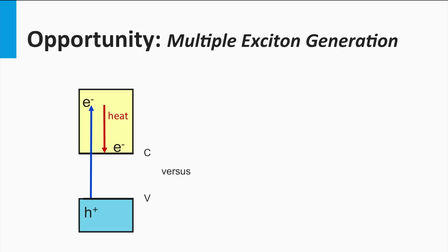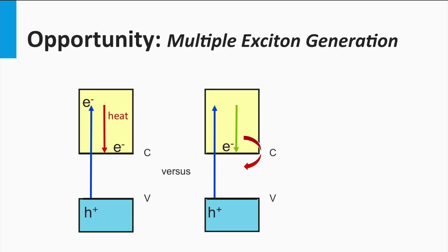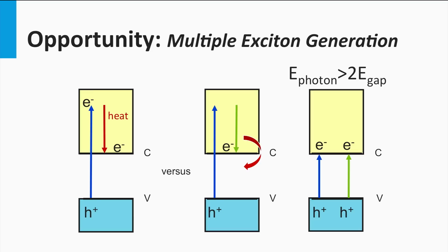Multiple exciton generation, abbreviated MEG, is another approach which can accomplish the excitation of more than one electron-hole pair per photon. The difference with spectral down-conversion is that all fundamental energy conversion steps occur in the PV active layer. In a normal semiconductor material, a high-energetic photon has some rest energy which is not used to excite the electron — this excess energy is usually lost as heat. In the MEG approach, this rest energy is transferred as a quantized energy package within the material, where it can excite a second electron into the conduction band, so that the energy in one photon results in two excited electrons.